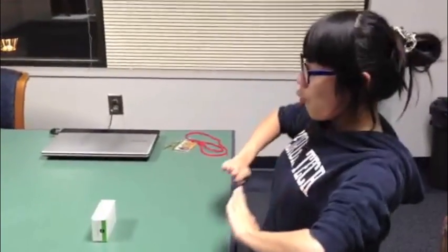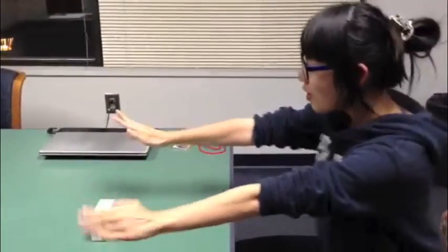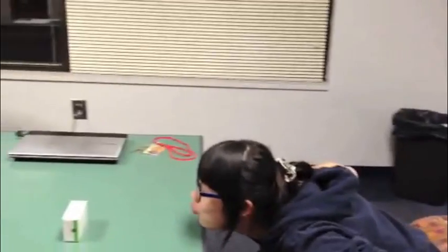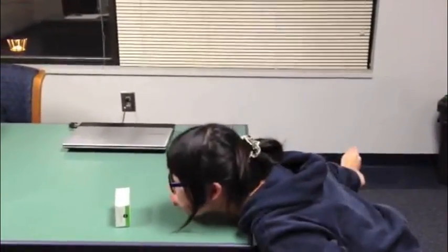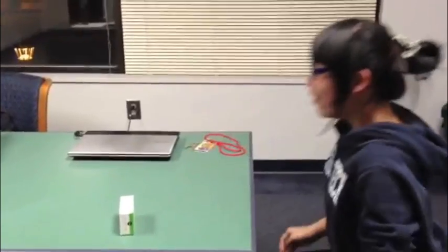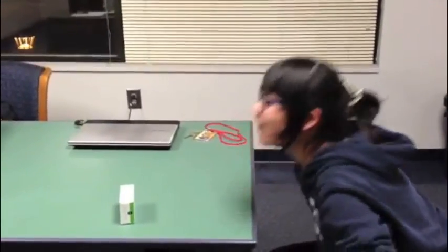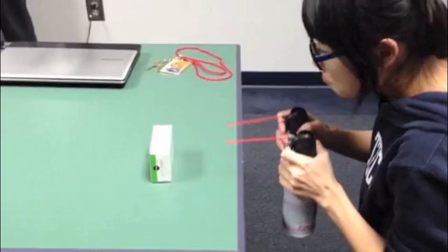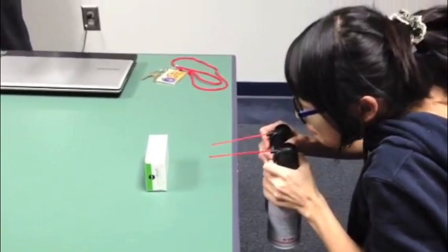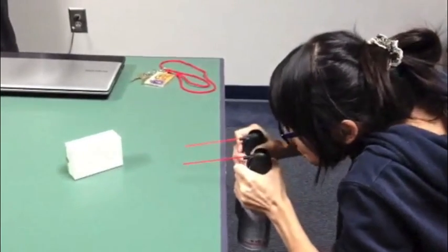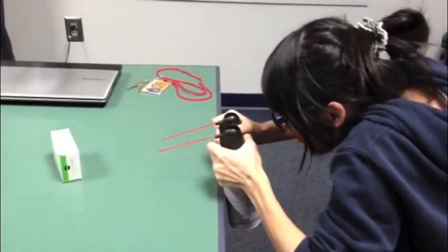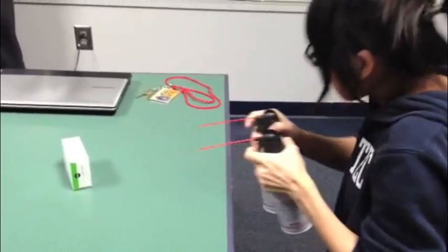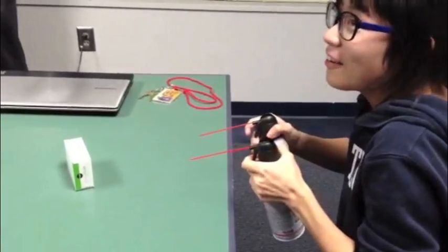Lastly, there is a relationship between relative velocity and drag force. Here we attempt to move a bar of salt with different speeds of wind. First, we use our own breath, producing low-speed wind. However, the low velocity was not able to produce enough drag force to overcome the frictional force of the table. On the second try, we use cans of compressed air, producing a much higher relative velocity, and successfully push the salt bar across the table, confirming the correlation between drag force and relative velocity.